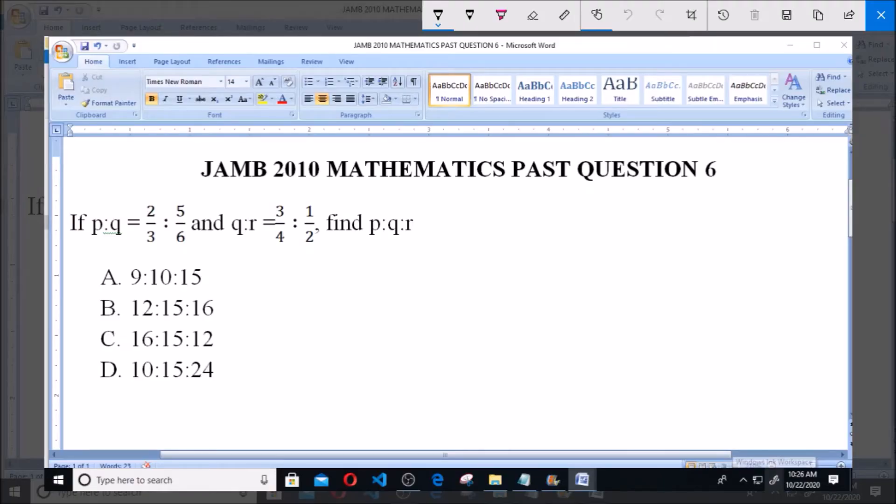Hello, good day and welcome. I'll be answering JAMB 2010 Mathematics Past Question 6. If p ratio q equals 2/3 ratio 5/6, and q ratio r equals 3/4 ratio 1/2, find p ratio q ratio r.